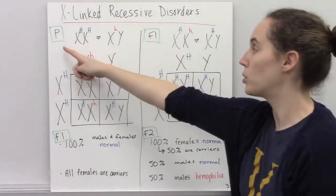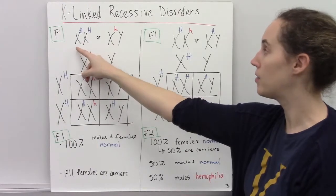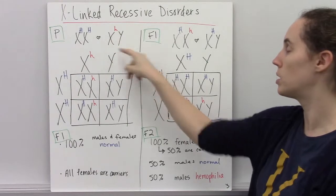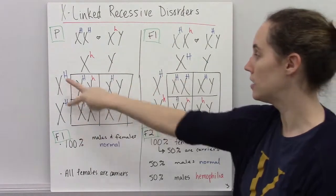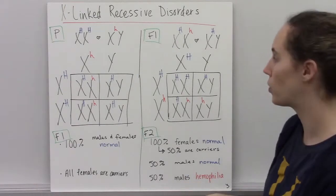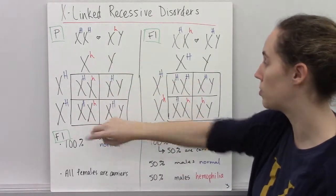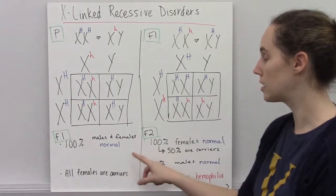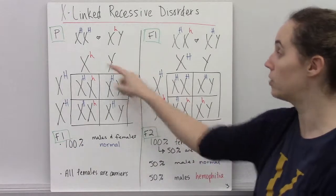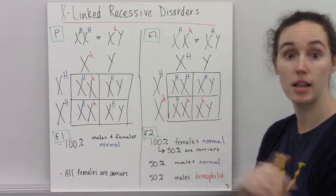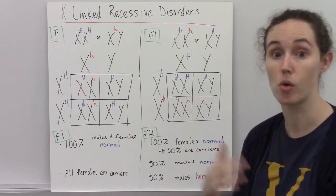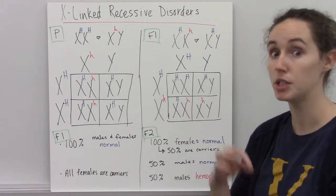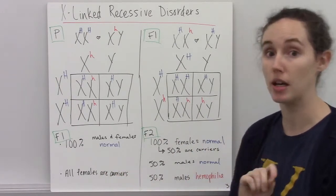In my example, in my parental generation, I have a female who is homozygous for normal, and a male who has hemophilia. When they mate and we fill in our Punnett square, you can see that 100% of the males and the females show the normal phenotype, because they all have a copy of the normal dominant allele. But you'll also note that all females do carry a copy of the hemophilia gene.